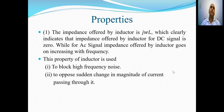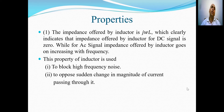The angular frequency ω is related to the frequency f of the signal by ω = 2πf. Since the impedance offered by an inductor is jωL, for a DC signal the frequency is 0, so the impedance offered by the inductor to a DC signal is 0.